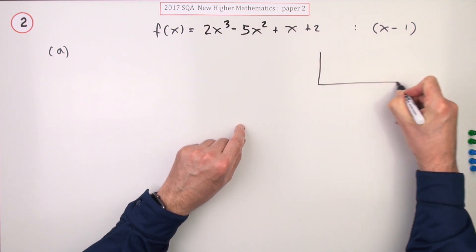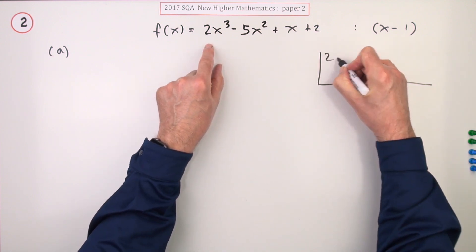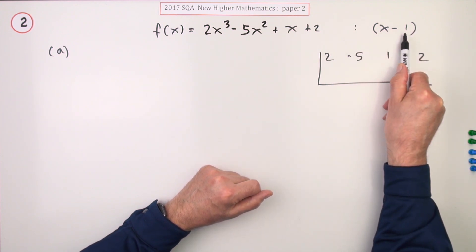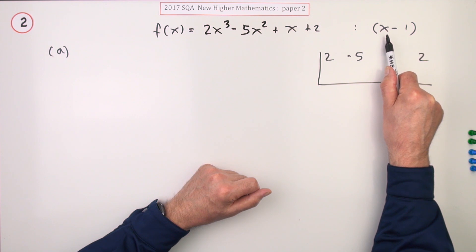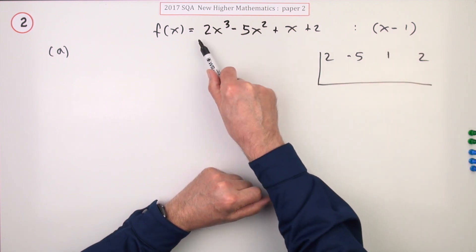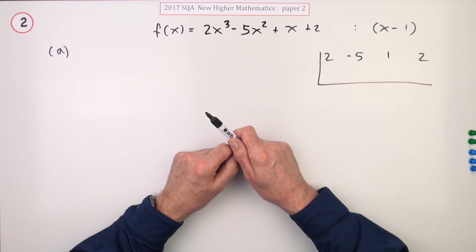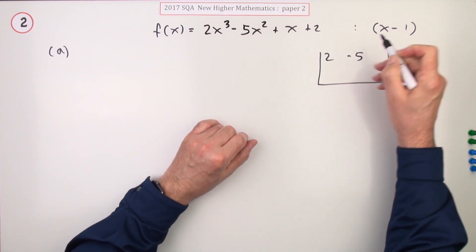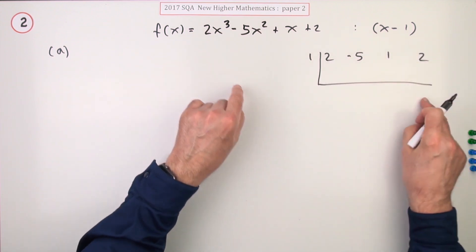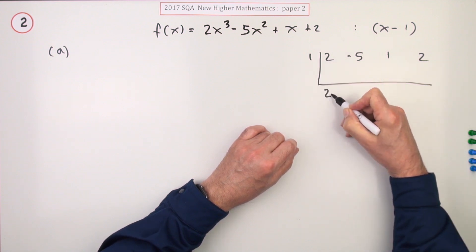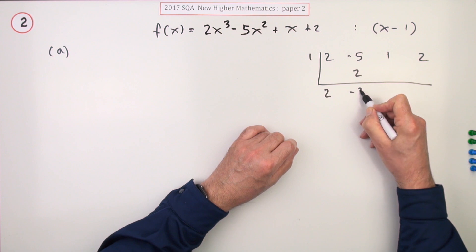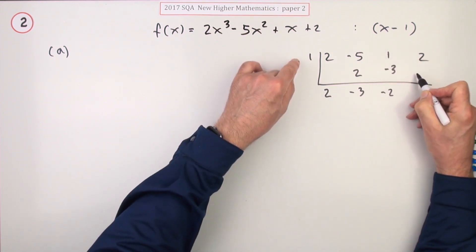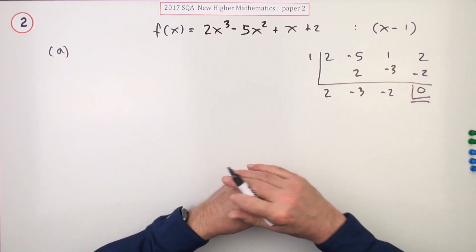So you'd start off by saying this. What are the coefficients? Make sure they're all there. They are: 2, negative 5, 1, and 2. Then if x minus 1 is a factor, that means the number x equals 1, when fed through this, should give the answer 0. So you're trying the number 1 into this and seeing if the answer comes to 0. Bring it down, multiply it up, that's a 2. Add it down, multiply it up by the 1, that's negative 3. Add it down, multiply it up, and when you finally add it down there's a 0 there.